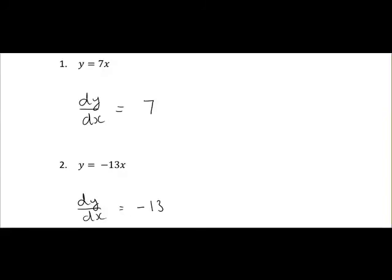So just to recap, when it's x on its own, so in this case we have 7x or minus 13x or 1x in our last example, we just drop the x when we differentiate it. But the next question you have to ask yourself is, why do we do that?